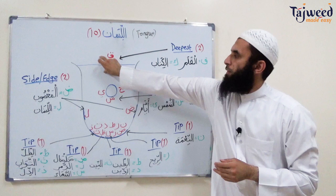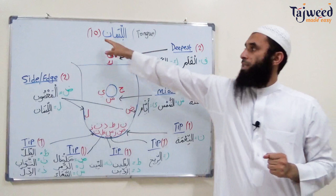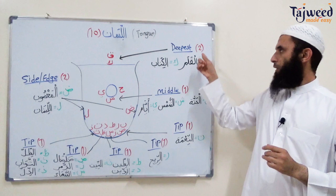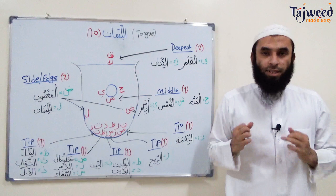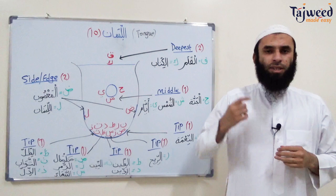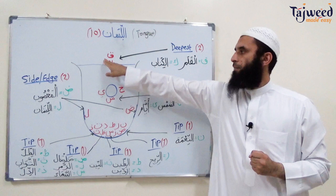Right at the back, the deepest part near the throat, there are two letters with two different makhraj points: Qaf and Kaf. Qaf — like in al-qalam — is right at the back near the throat, and this is a difficult letter because it's uncommon in many languages. Kaf is closer to the mouth than the throat, like the K in English, as in al-kitab.